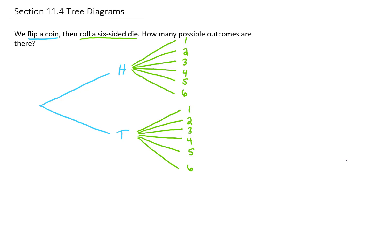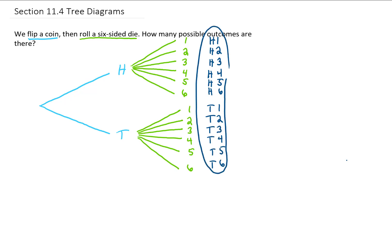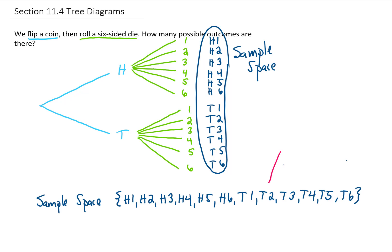Based on this tree diagram, let's make a list of all of those possible outcomes. We flip the heads and roll the one, we flip the heads and roll the two, and so on. Down here, we flip the tails and roll the one, we flip the tails and roll the two, and so on. All of these possible outcomes of these two events is called our sample space, which is often written out as a set. Each element in our sample space is called a point in that sample space.